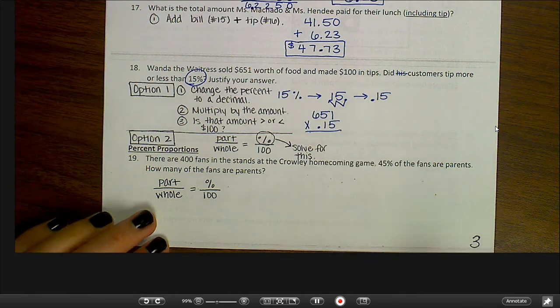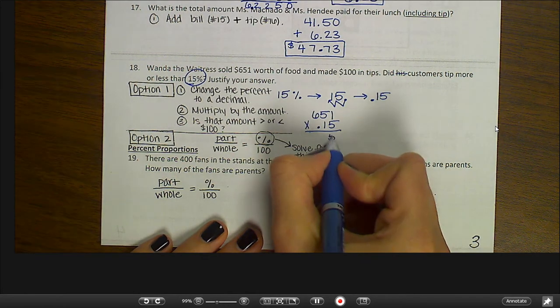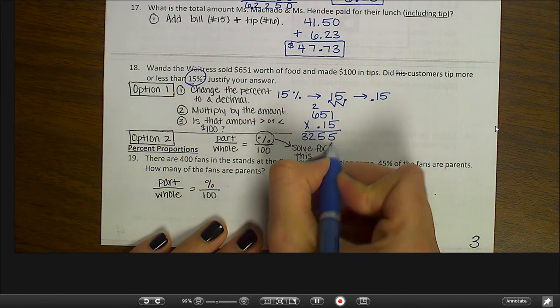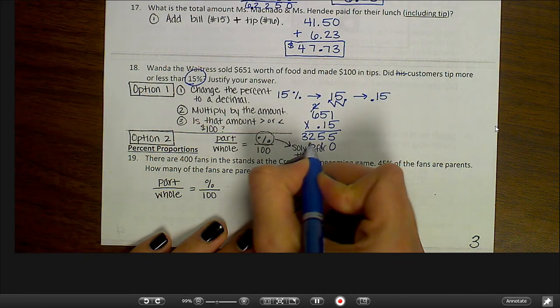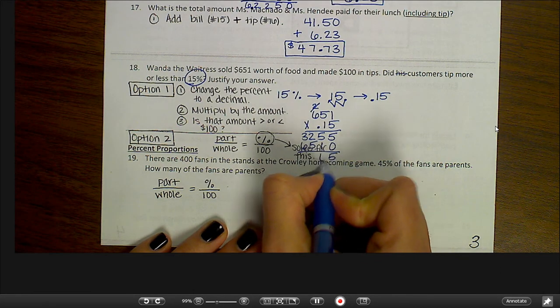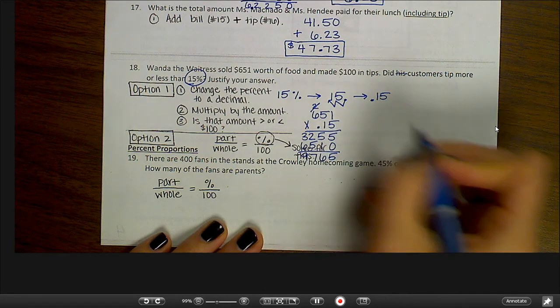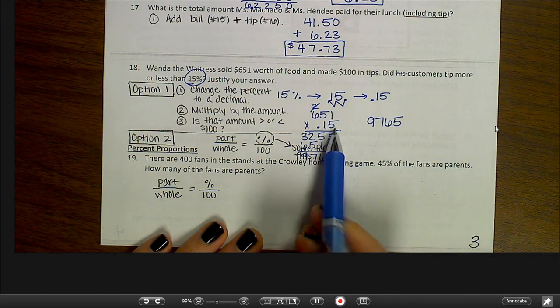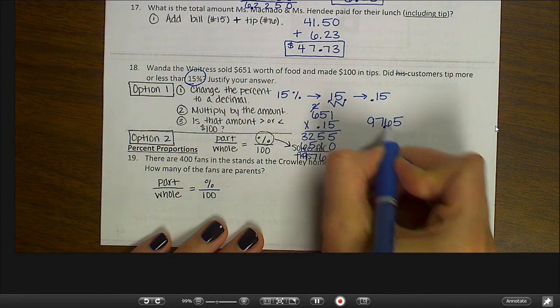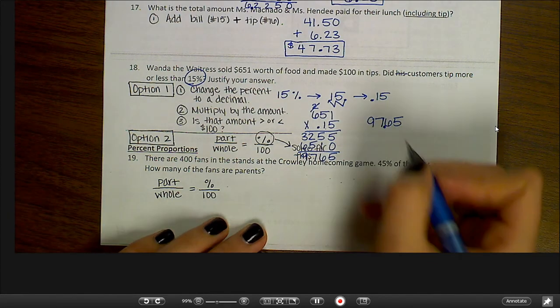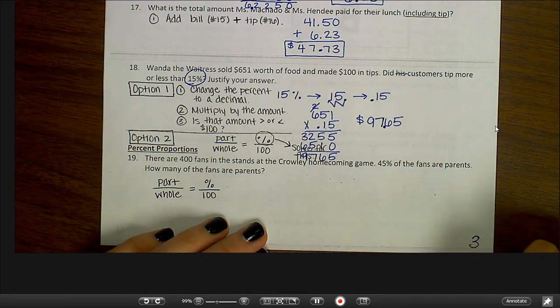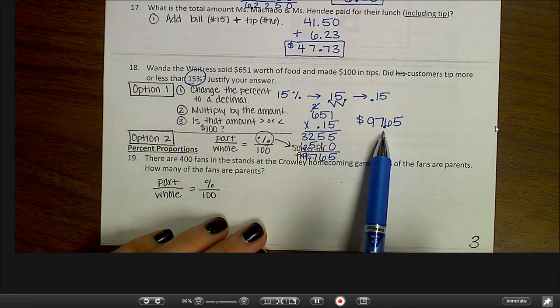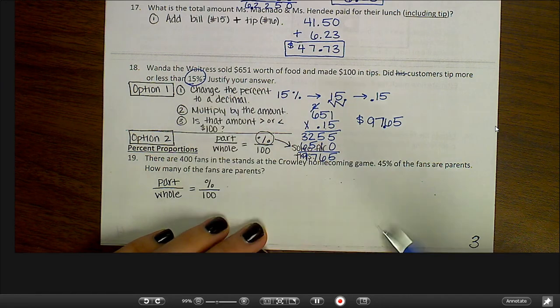I'm sorry that we're getting a little short on space here. 5 times 1 is 5. Go ahead and follow along with me. So that you can see this a little better, I got 9, 7, 6, 5. And I have one, two digits behind the decimal. So 97.65. That would be a 15% tip. Well, I made $100 in tip. So did I make more or less than 97.65? I made more. Which means that I made more than 15%.